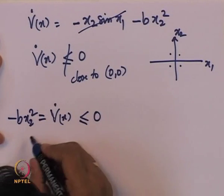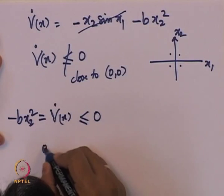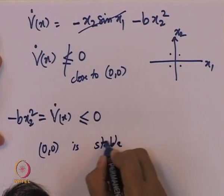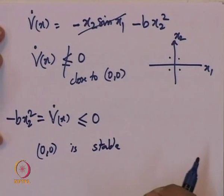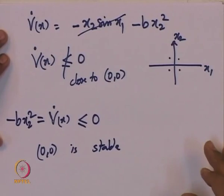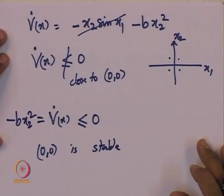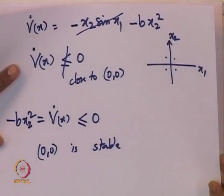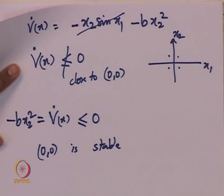However, this Lyapunov function has not helped us prove asymptotic stability, even though by intuition we know the equilibrium point is asymptotically stable because friction continuously dissipates energy. This particular Lyapunov candidate does not help prove asymptotic stability. However, we can use LaSalle's invariance principle with the same Lyapunov function.